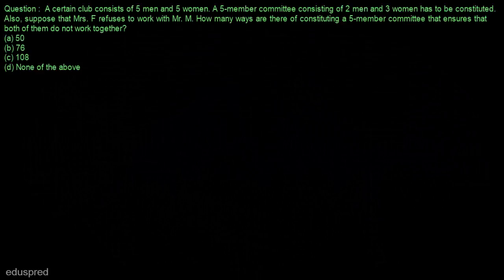In this video, I am going to solve this question. A certain club consists of 5 men and 5 women. A 5-member committee consisting of 2 men and 3 women has to be constituted. Also, suppose that Mrs F refuses to work with Mr M. How many ways are there of constituting a 5-member committee that ensures that both of them do not work together?